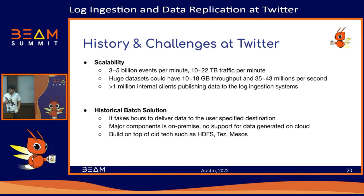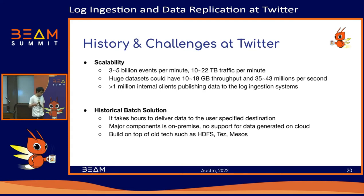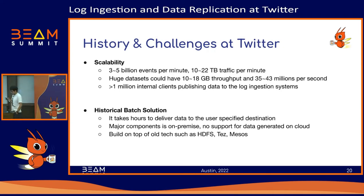We used to have a historical batch-based pipeline that took hours to deliver data to user-specified locations such as HDFS in a data center, GCS, or BigQuery. This pipeline ran mainly on-prem in our local data center, built on top of batch stacks like Hadoop, TAS — a MapReduce framework — and Mesos. It didn't have support for cloud-generated data, so we wanted to evolve our pipeline.